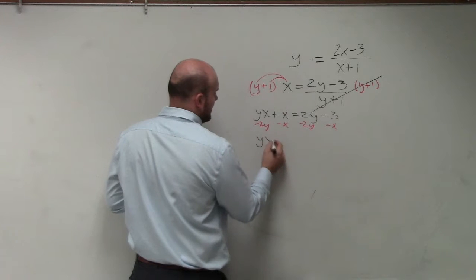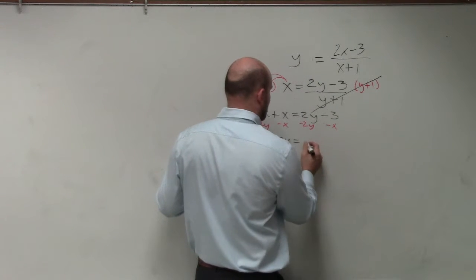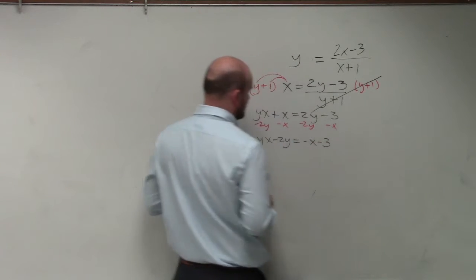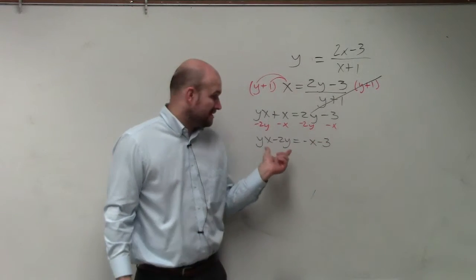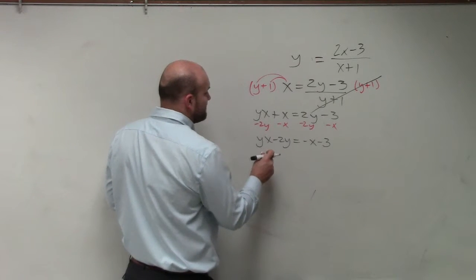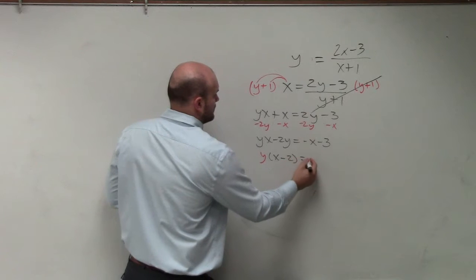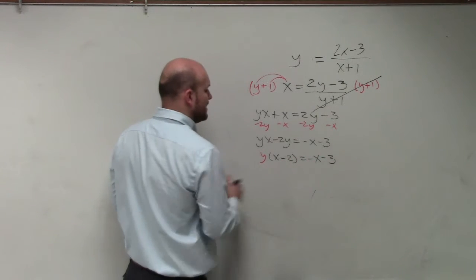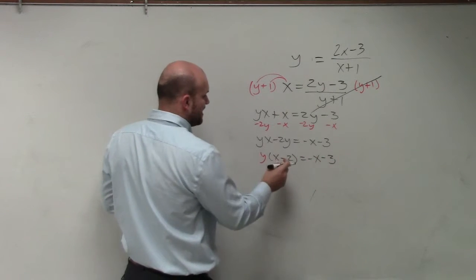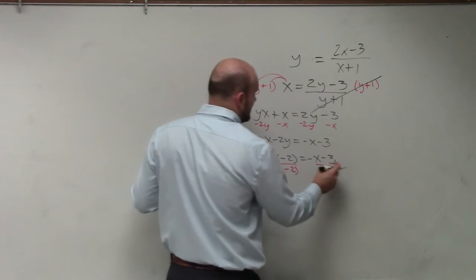So now I'm left with yx minus 2y is equal to negative x minus 3. Again, I can't combine these. They're not like terms. But I need to solve for y. So to get y by itself, I can factor out the y. Then you can see my y is being multiplied by x minus 2. So to undo multiplying, I will divide.